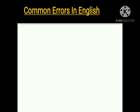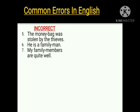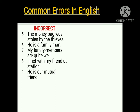Again I am taking some incorrect sentences. The sentences are: 'The money bag was stolen by the thieves.', 'He is a family man.', 'My family members are quite well.', 'I met with my friend at station.', 'He is our mutual friend.', and 'I did a mistake.'